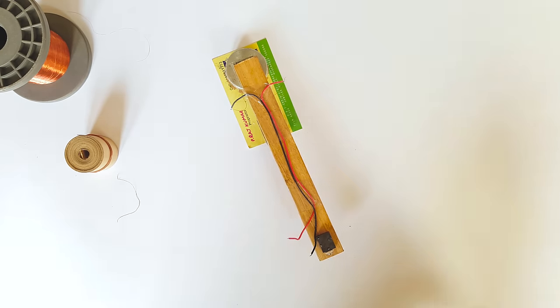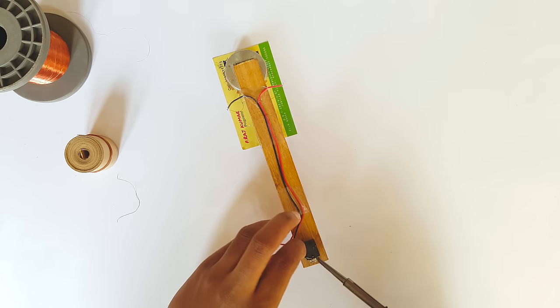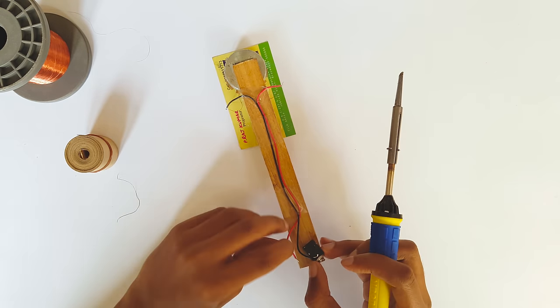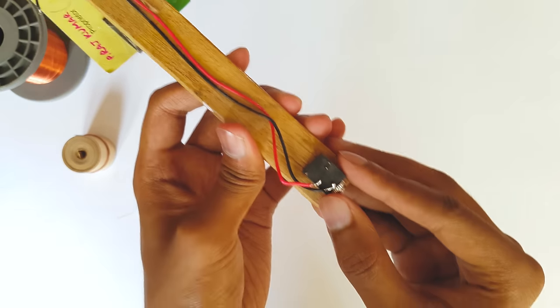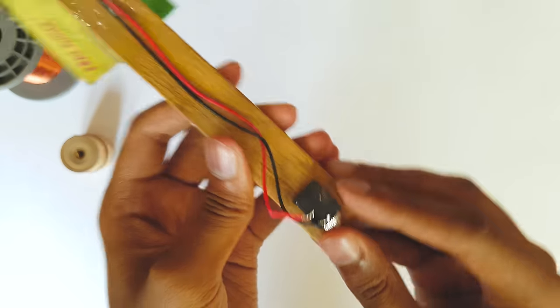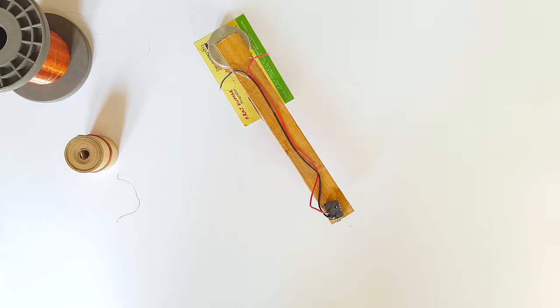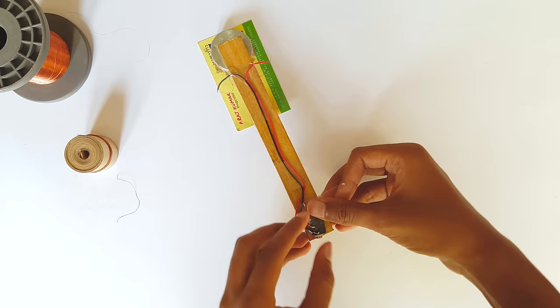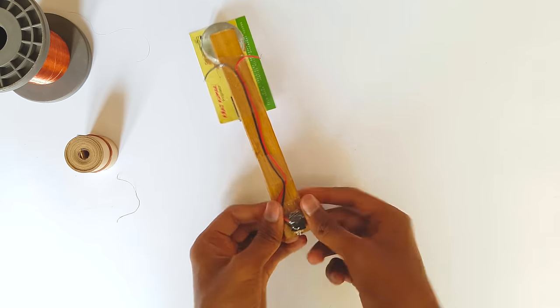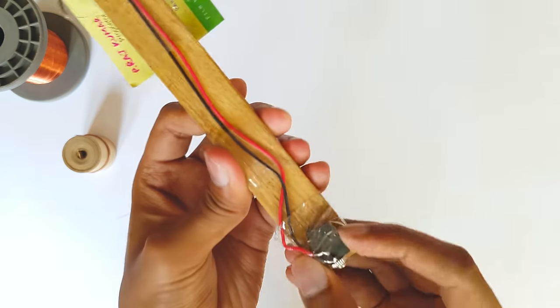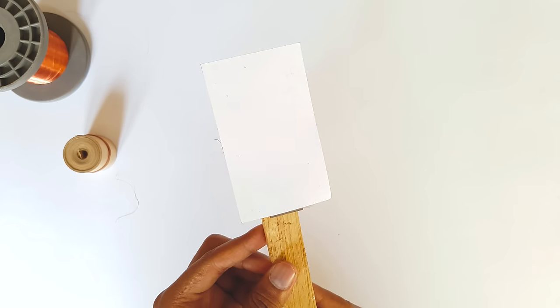Solder the wires to the tips of the socket. This is how it should look like. Now fix the socket to the handle using a piece of tape in a comfortable position. The assembling part of the microphone is done guys. This is how the microphone looks like. Now we are ready to test the microphone.